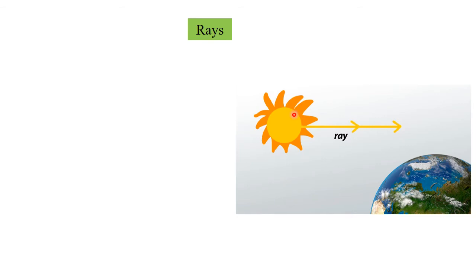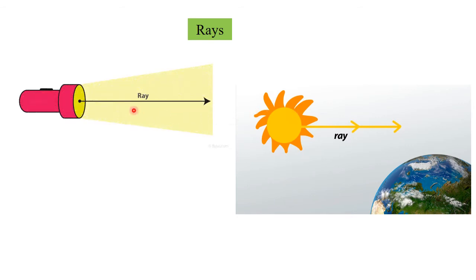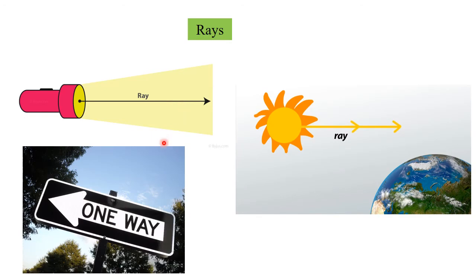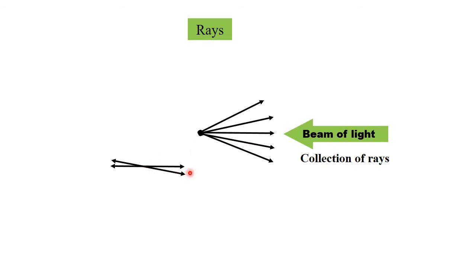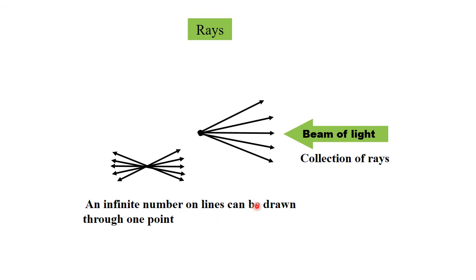We can see that the rays starting from the sun go forward in all directions. Light rays from a torch also start from one point and go forward continuously in one direction only. This board of direction also shows going in one direction only. If we draw rays from a single point, this collection of rays is called a beam of light. An infinite number of lines can be drawn through one point.